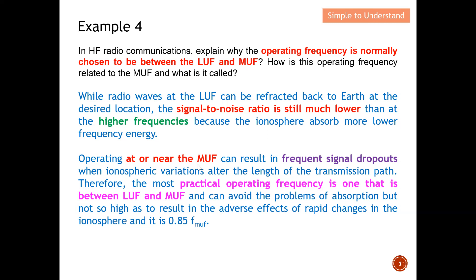Operating at or near the MUF can result in frequent signal dropout — sometimes you contact the aircraft, sometimes you don't — because atmospheric variation alters the length of the transmission path. Therefore the most practical operating frequency is one that lies between the LUF and MUF: high enough to avoid excessive atmospheric absorption, but not so high as to cause rapid signal dropout due to atmospheric changes. As a guide, the operating frequency is typically chosen as 0.85 times the MUF.